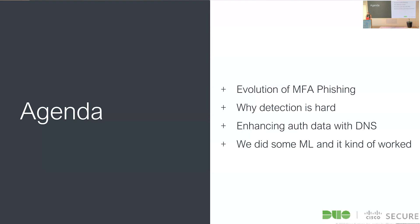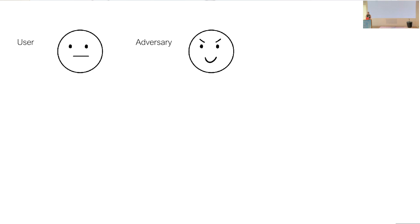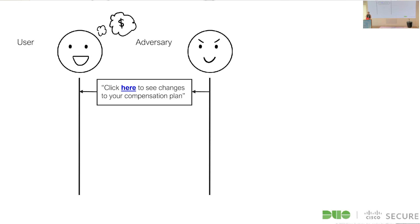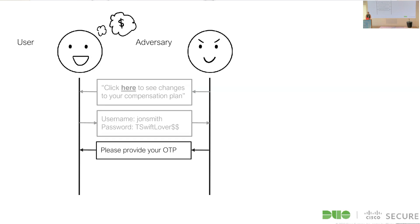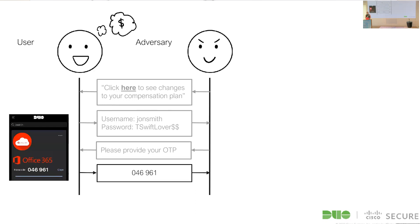So let's talk about phishing. You're a user ready to log in, and your adversary wants your credentials. They send you an email saying 'please click here to see changes regarding your compensation plan.' You click, and it takes you to a login page — a static login page where the attacker is collecting credentials. They know you're using MFA, so they ask for your OTP code. You open your authenticator app and provide your six-digit OTP — you use MFA all the time, so this isn't unexpected.